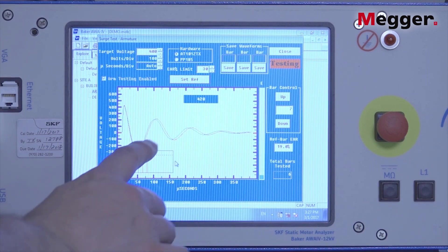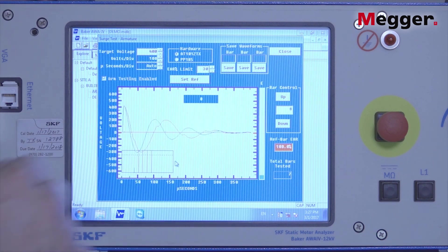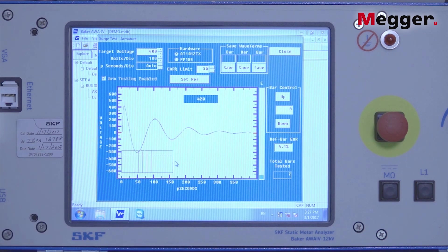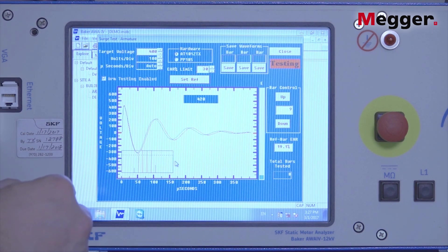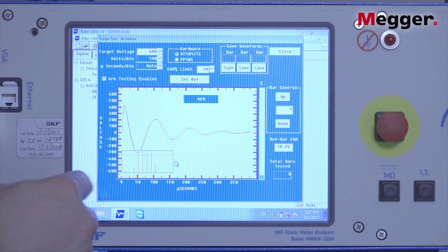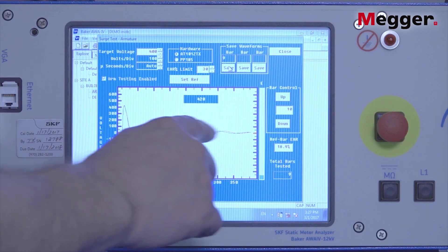If there's a particular wave pattern you want to save, click the save button before doing the next test. If I'm interested in this wave pattern, release the test button, then click the save button. That'll save that particular bar number and waveform.